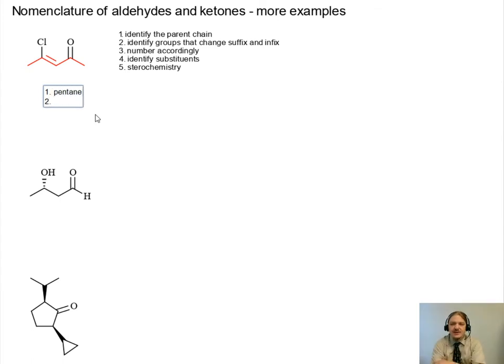Stage 2, we need to identify those functional groups that change the suffix and infix. So we have a ketone that changes the suffix to own. And we have an alkene that changes the infix to ene. So that's going to adjust the parent chain name from pentane to some kind of pentane own. And we're going to number the chain so that we end up with locants that tell us where these things are.